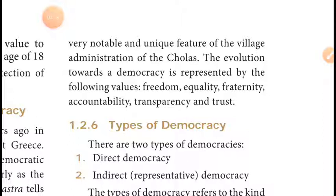What is the Kudavala system? However many contestants wanted to participate in the election, their names were written on palm leaves and put into a big pot. A child would then draw names one by one. The first name drawn became president, the next vice president, and so on for other categories. This is the Kudavala system, first followed during the Chola period.